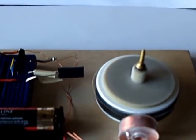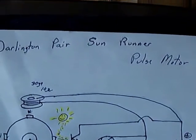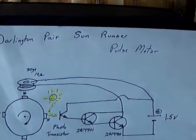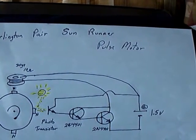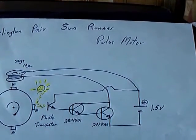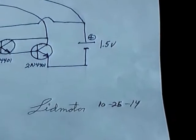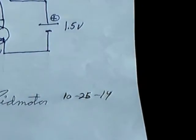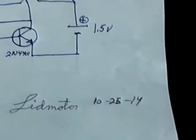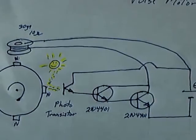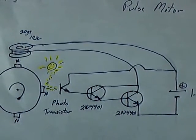Triggered by a phototransistor. I'm calling this the Darlington Pair Sunrunner Pulse Motor. And I'm the lid motor, and this is the 25th of October 2014. You can freeze frame this and look at the circuit.